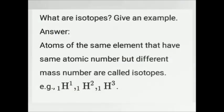What are isotopes? Atoms of the same element that have the same atomic number but different mass number are called isotopes. Example: isotopes of hydrogen — ¹H¹, ¹H², ¹H³. Here, all the hydrogen has 1 as atomic number but mass numbers 1, 2, 3 are different.